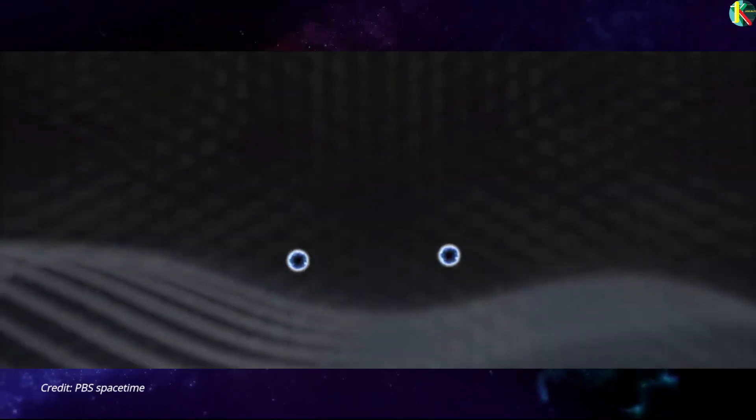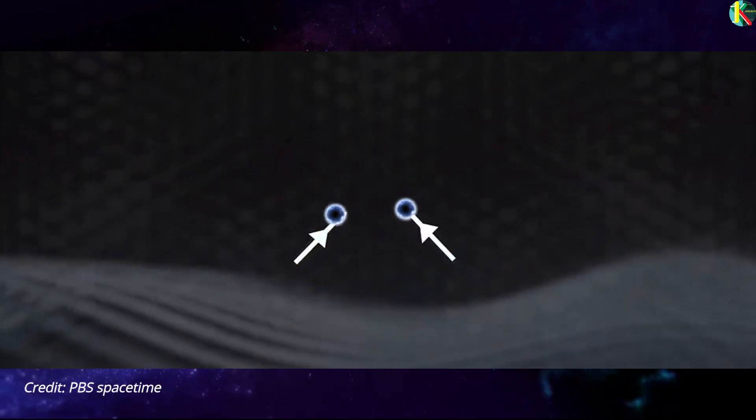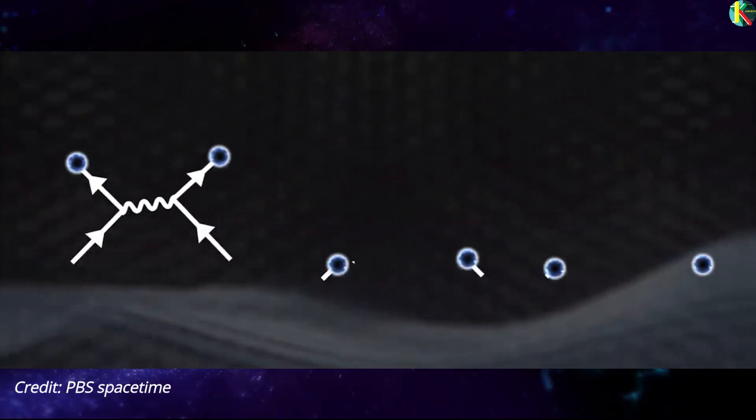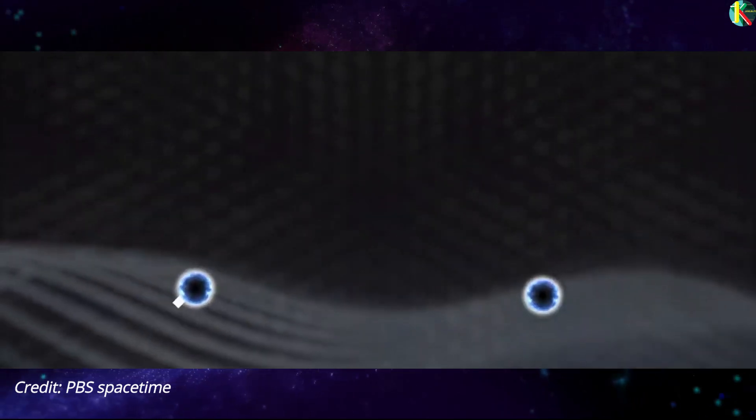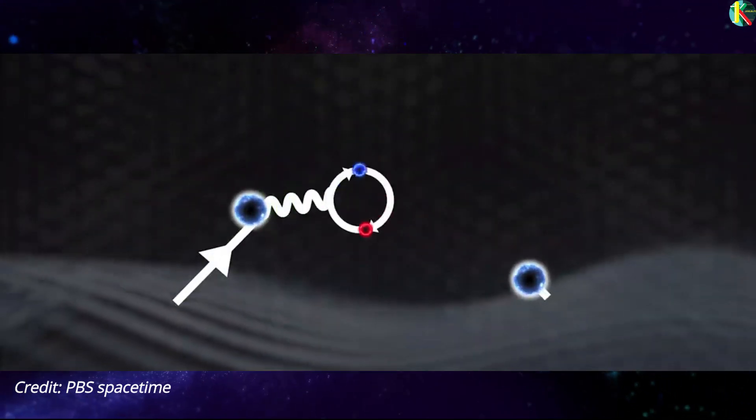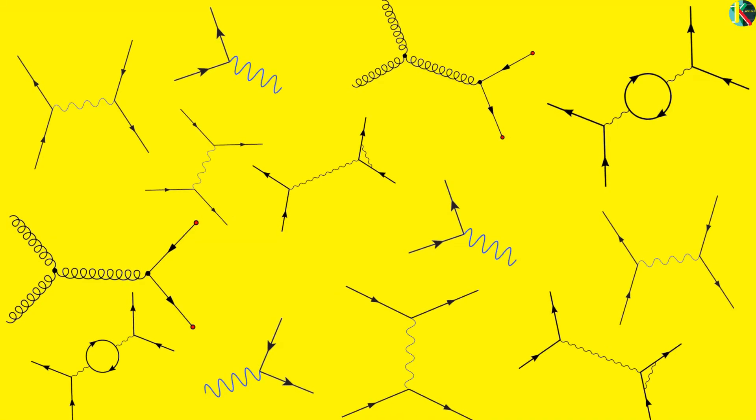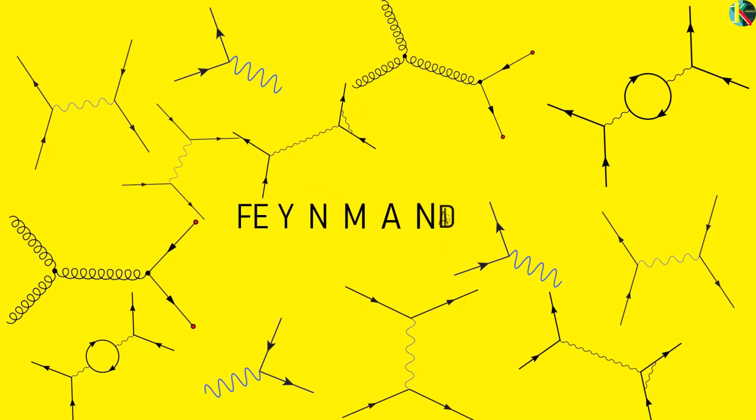For example, a pair of electrons could repel each other by exchanging 1 virtual photon or 2 virtual photons or 3 etc., or those virtual photons could do something weird like momentarily becoming an electron positron pair.